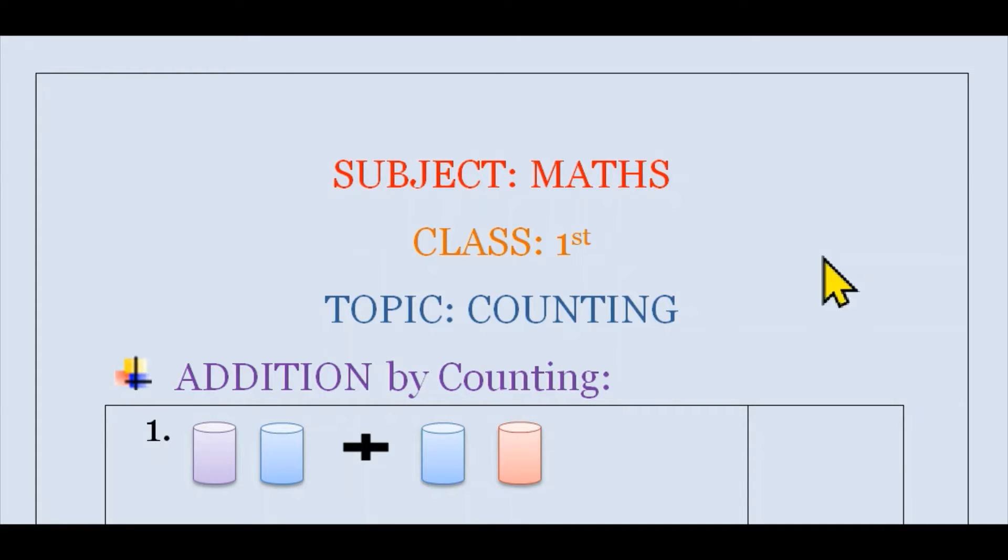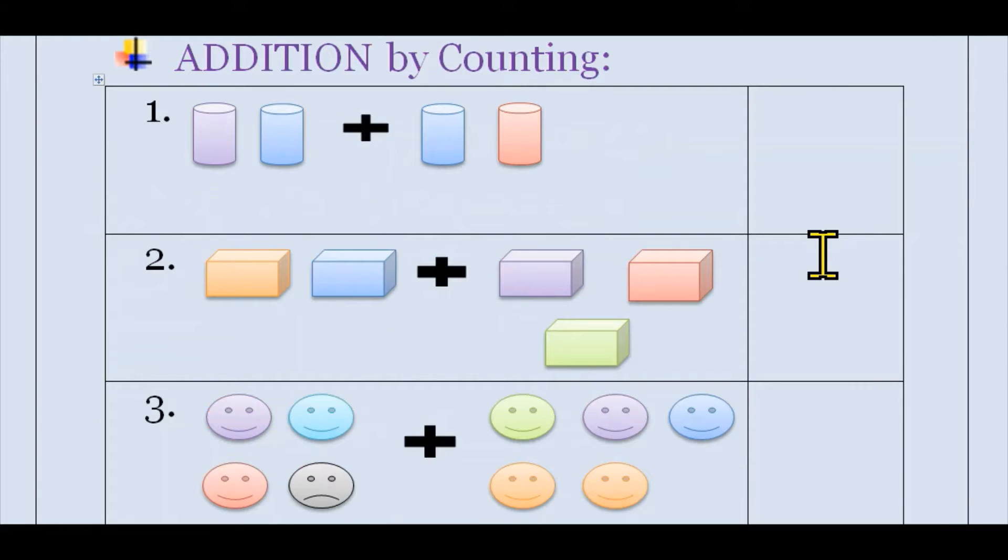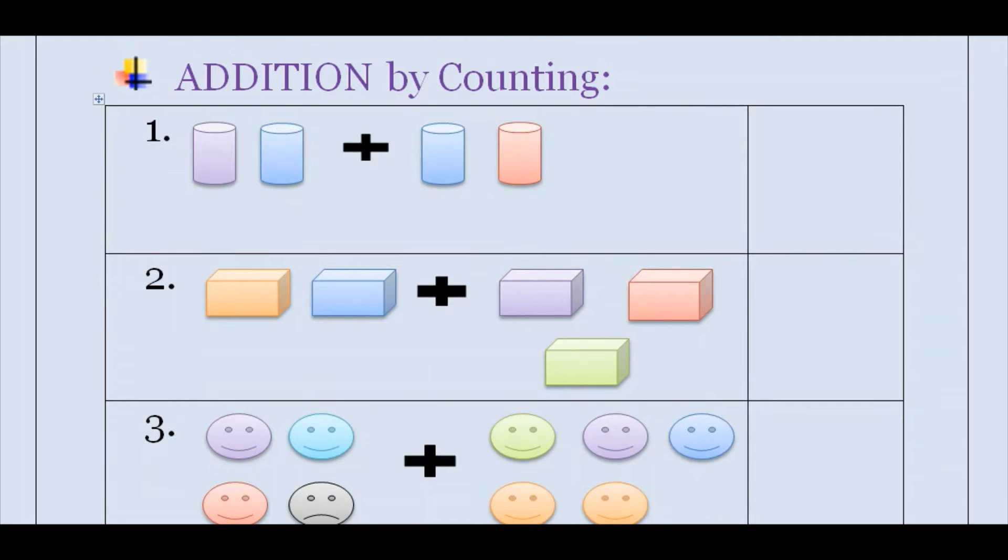Let's see our first question. Here you can see cylinders. We have to count this and add them. So let's count: 1, 2, and here we have 1, 2. So now we will add them: 1, 2, 3, 4. So 4 cylinders. Here we have 4.